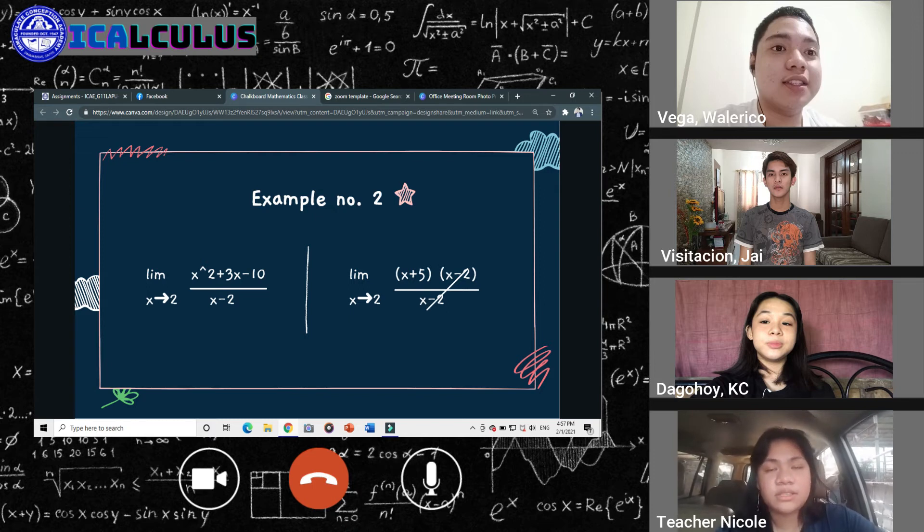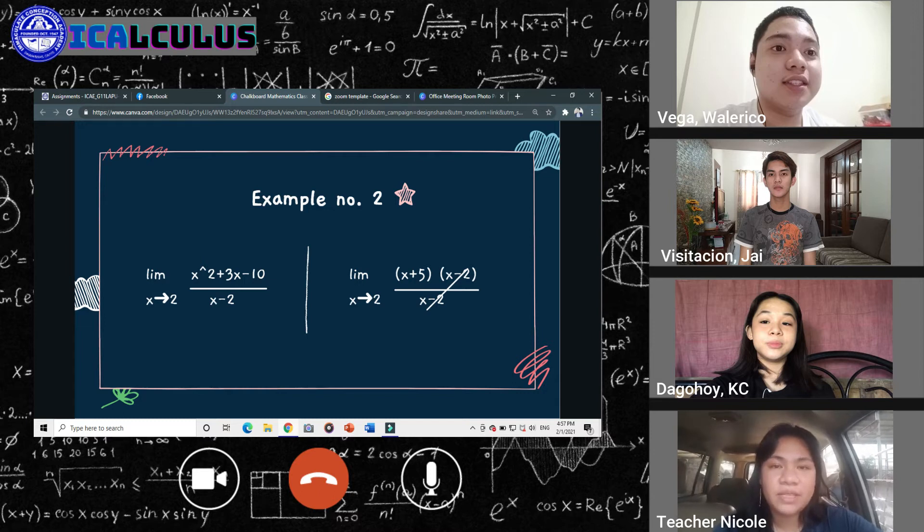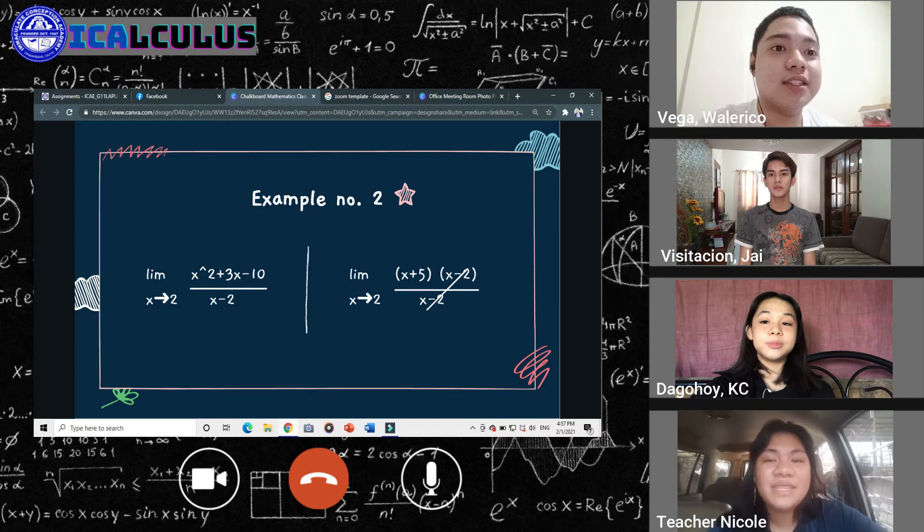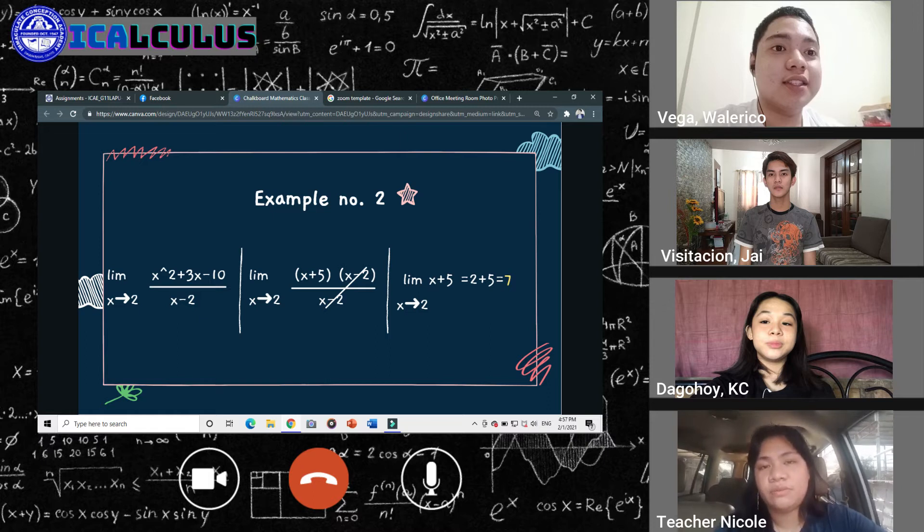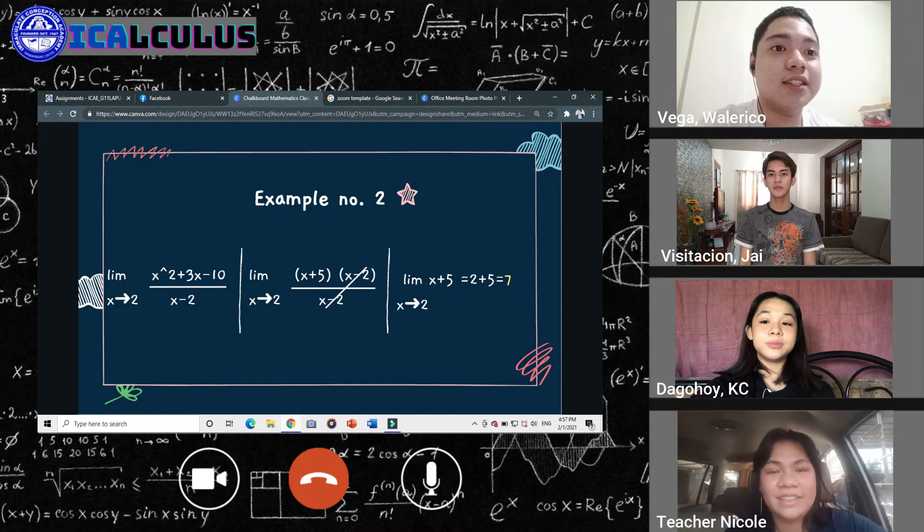And then let's move on to our next step. So now we have our factors, which is x plus 5, x minus 2, all over x minus 2. Again, you will notice that x minus 2 is present in the numerator and the denominator. We can cancel them out both completely, and it will leave us x plus 5. So now that we have simplified our given function, we can substitute. So 2 plus 5 is equal to 7. Therefore, the limits of x squared plus 3x minus 10 over x minus 2, as x approaches 2, is equal to 7. I hope you understood that.